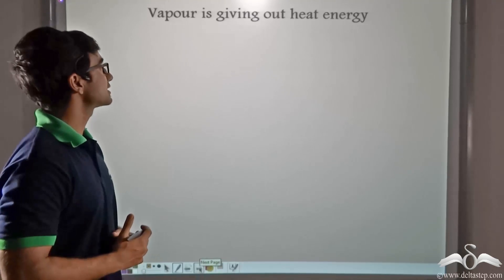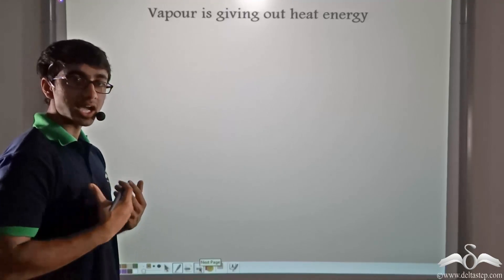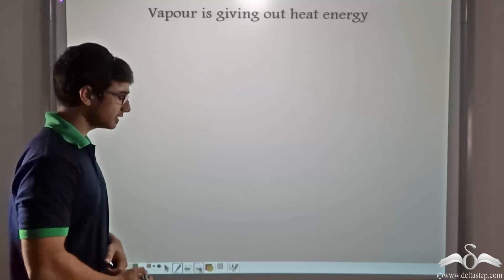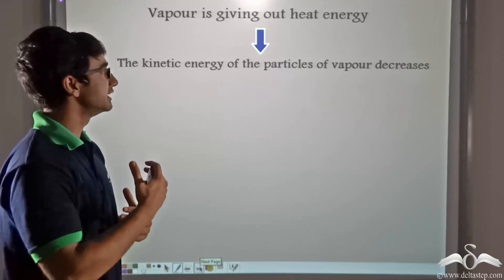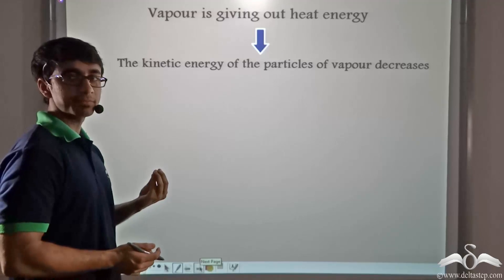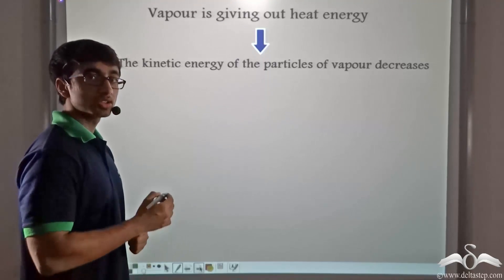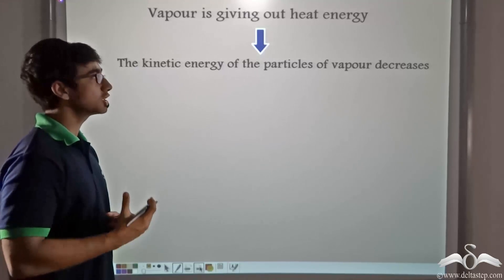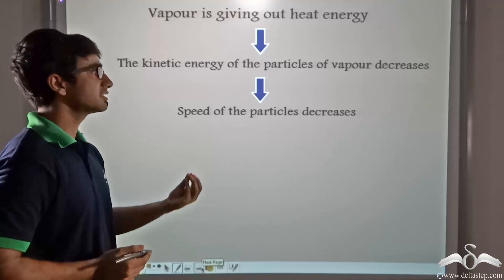In this case, the vapor that is hitting the cold plate is giving out heat energy — it is releasing heat energy. As a result, the temperature of vapor is decreasing. In other words, we can say that the kinetic energy of the particles of vapor is decreasing. So this leads to a decrease in the speed of the vapor particles.